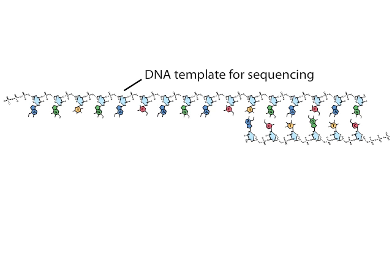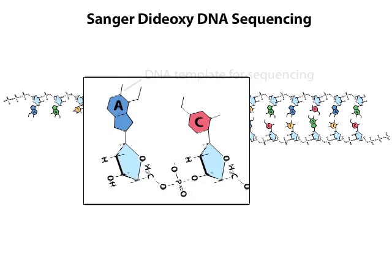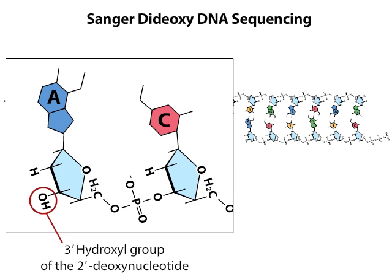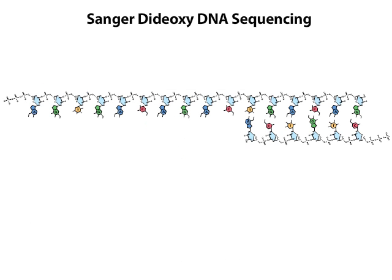The most commonly used method for sequencing DNA relies on the Sanger dideoxy strategy. Ingenious in its simplicity, the dideoxy method is based on the fact that a DNA chain can grow only if a 3' hydroxyl group is available on which to add to the growing strand. In DNA sequencing, the 3' OH group is initially supplied by a short oligonucleotide called a primer.